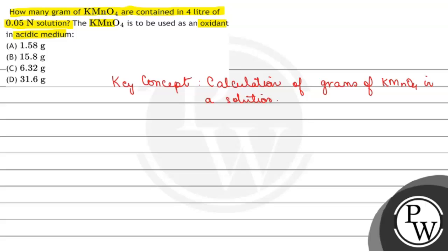The question mentioned that we are using this KMnO4 oxidant in acidic medium. So KMnO4, which is MnO4 negative ion, when it is present in acidic medium with H+ ions, it gets converted into Mn2+ ion.